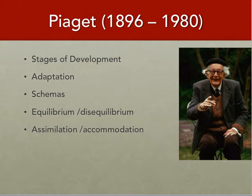The cool thing about these stages of development is that they're universal. If you look at a five-year-old in Russia, Spain, or Canada, you're going to see very similar developmental stages — which is just earth-shattering, because we always think we're so different. Piaget says no, we're really not. He suggests that children go through these stages to help them make meaning out of what is happening around them and to understand the world.